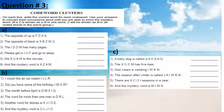Now, question number three. The code word clusters. In part A, the opposite of up is down. The opposite of black is white. The book has many pages. Please get in bed to go to sleep. We went to the movies. And the mystery word is, what relates to X? W. What relates to Z? R. A, N, M, K. So the word is wink. The mystery word is wink.